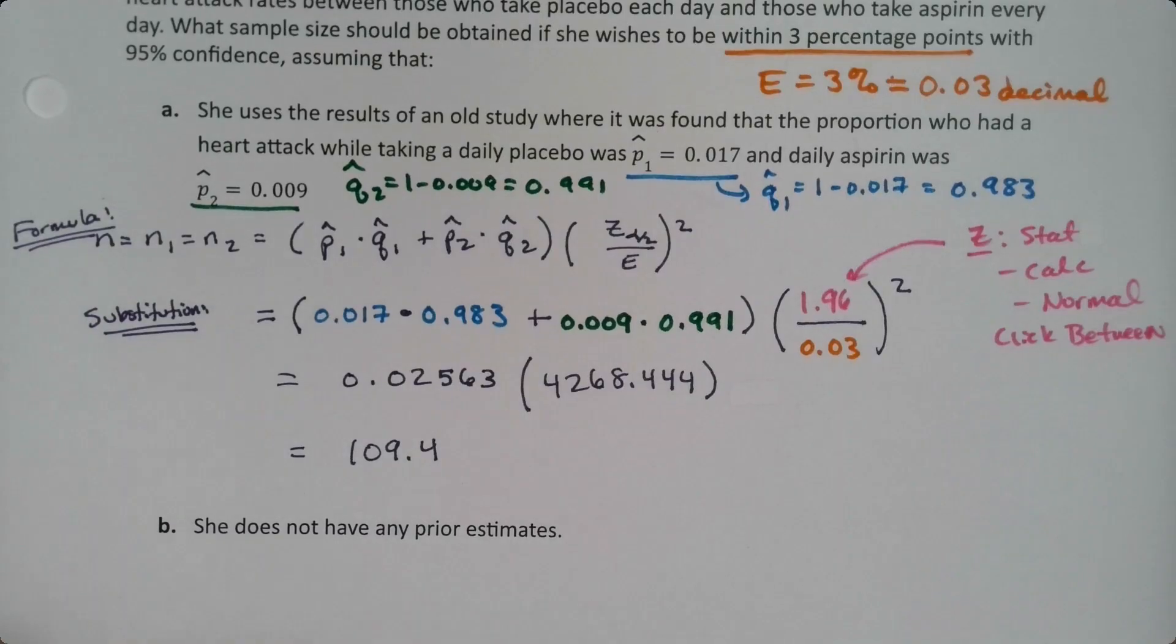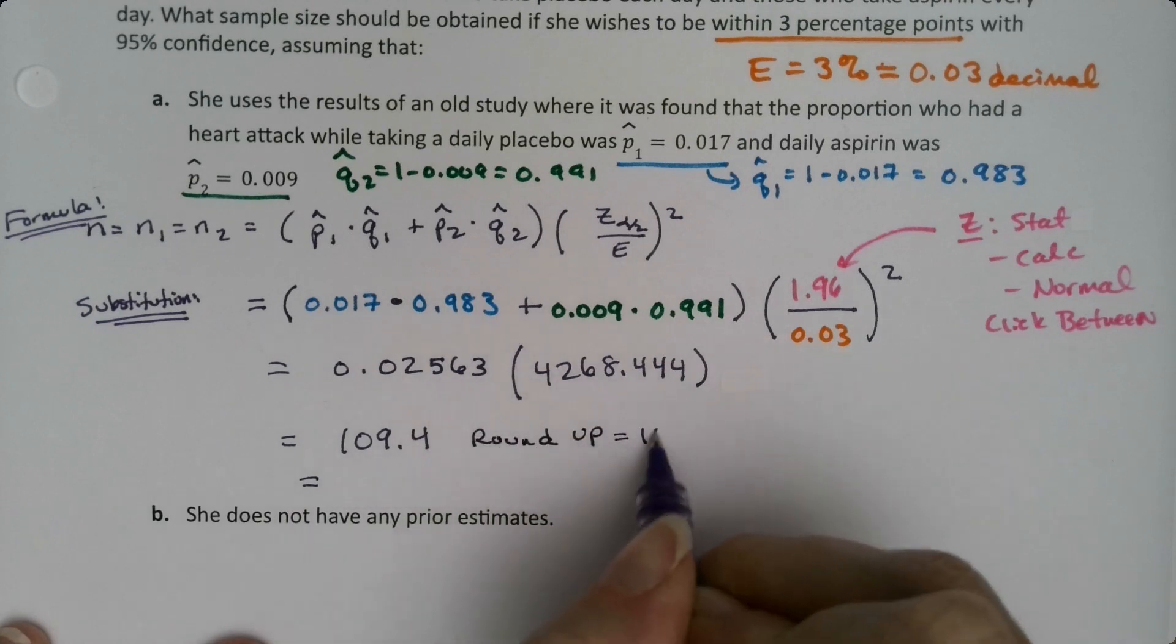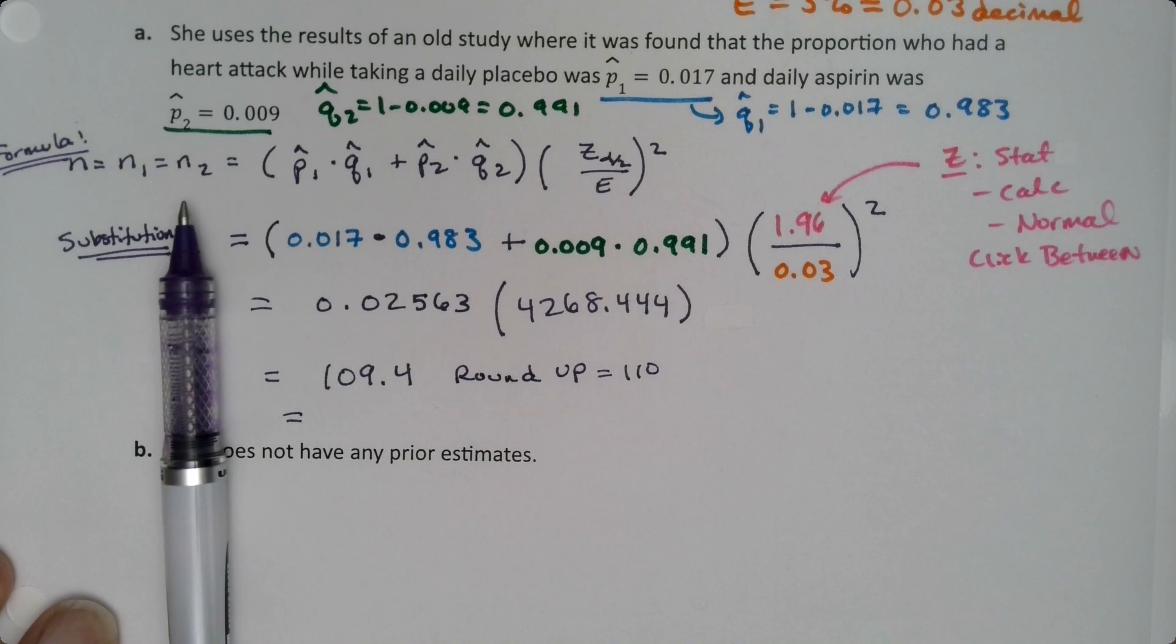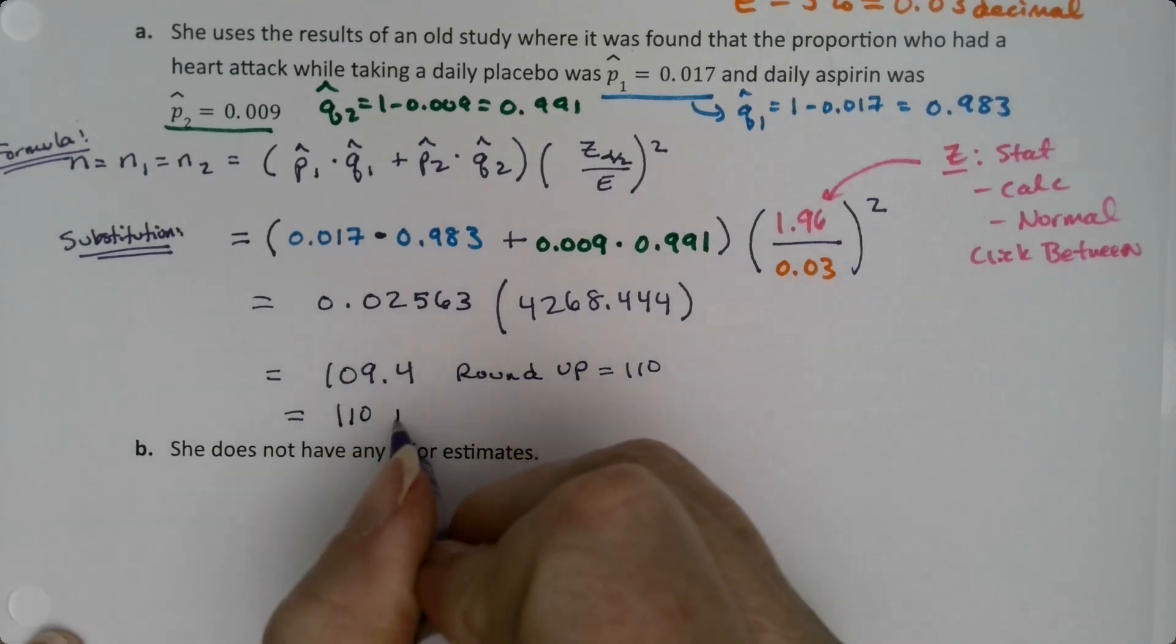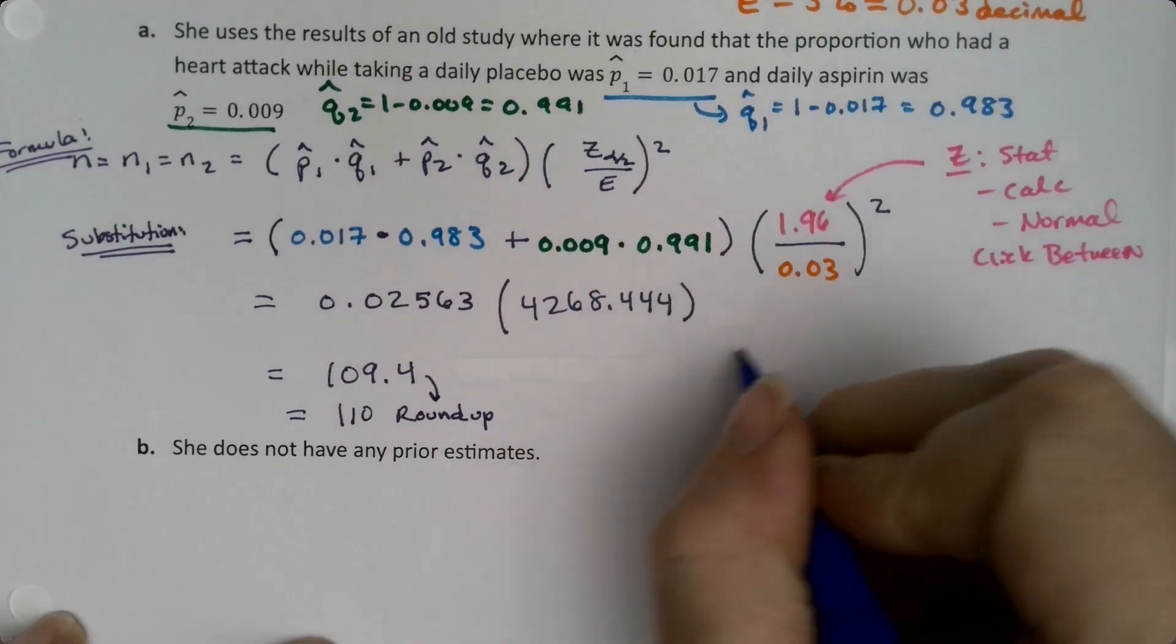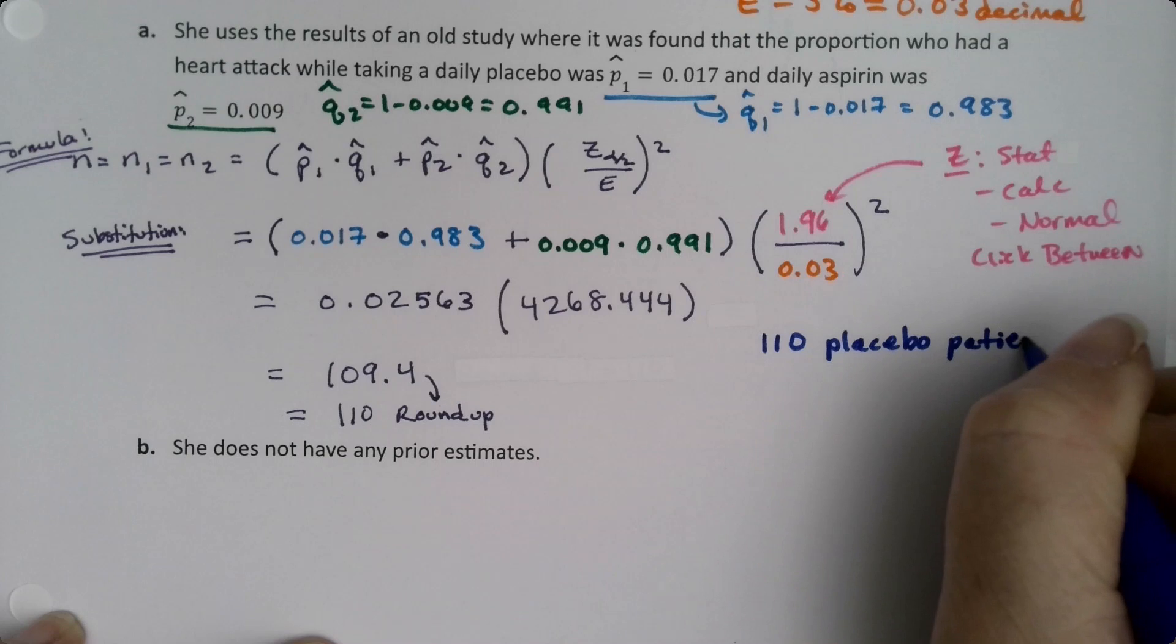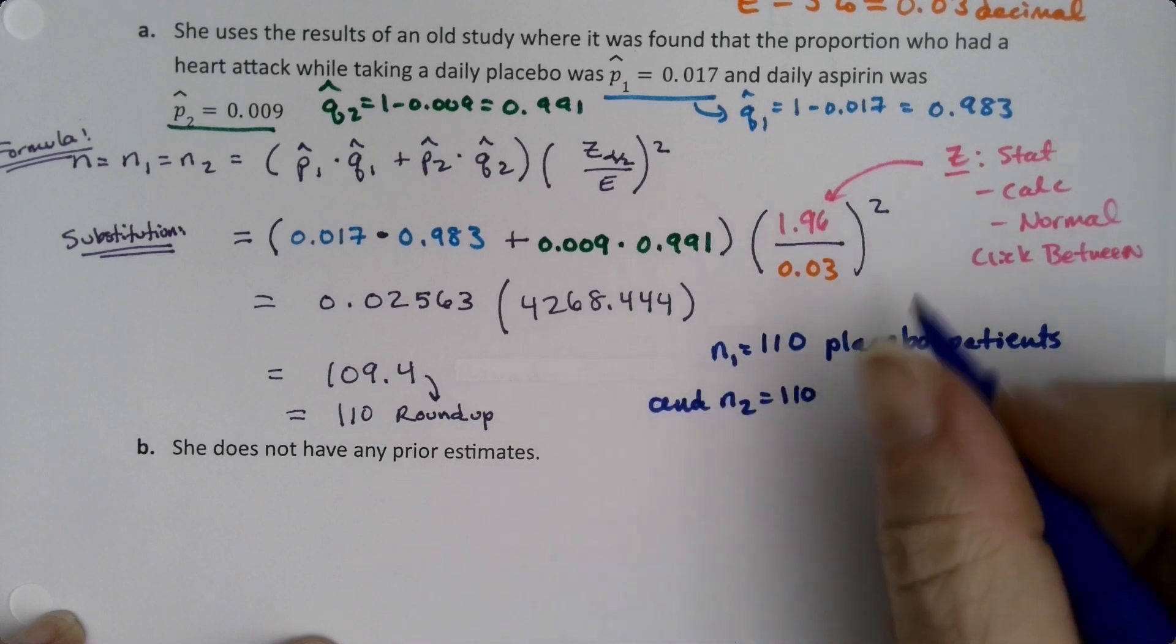Okay, so we get 109.4. But remember, we must round up. It'd be 110. Now, that's not the answer either. Why not? Well, because it's N1 and N2. So we actually need, we don't need 110 people total. We need 110 people each. Okay, so let me just write this. So let me round up. Let me make a note. Let me erase this over here. Because I want to put the final result. So we want 110 placebo patients. That's N1.